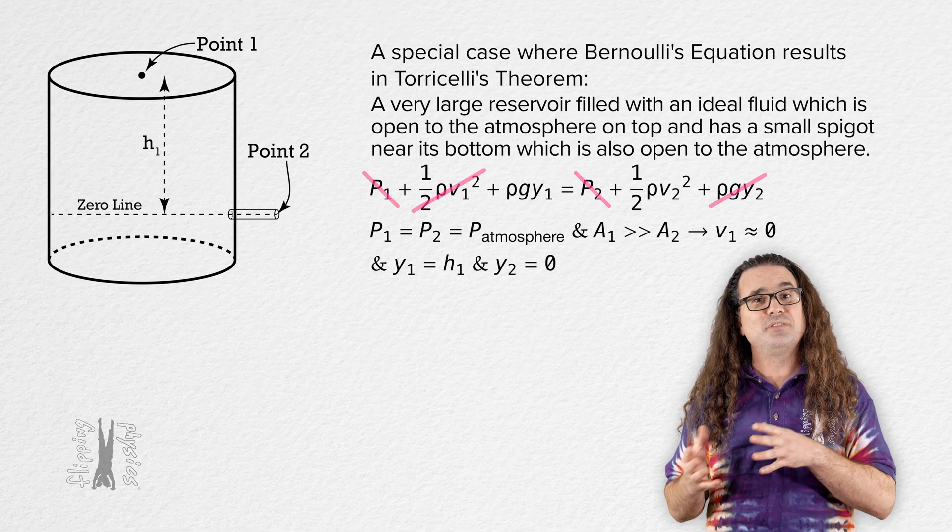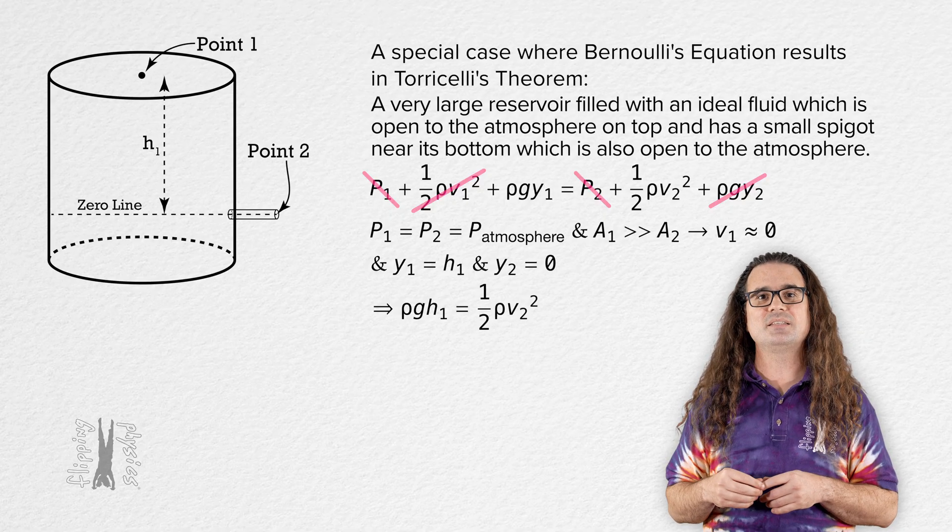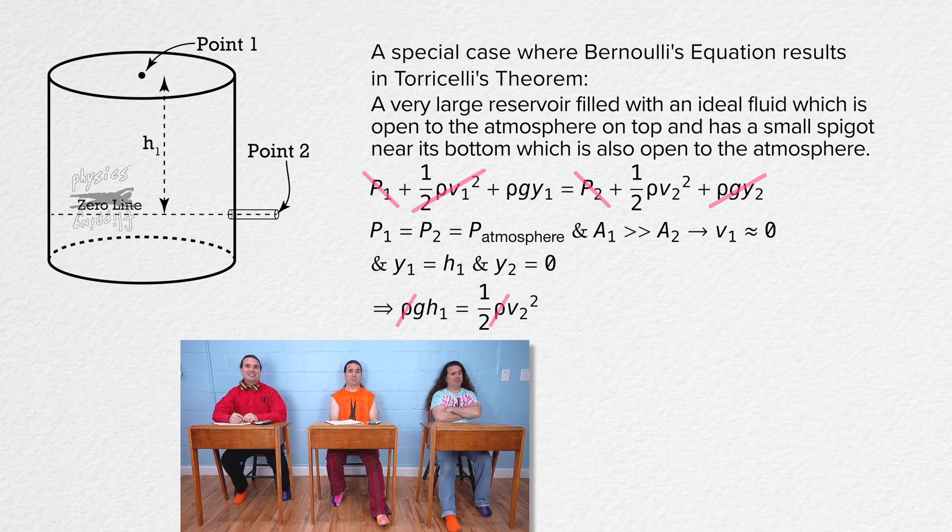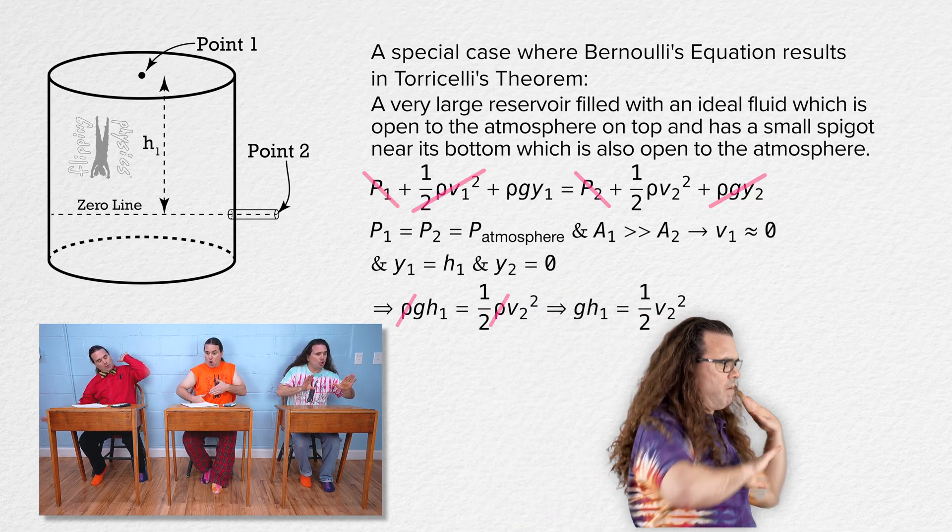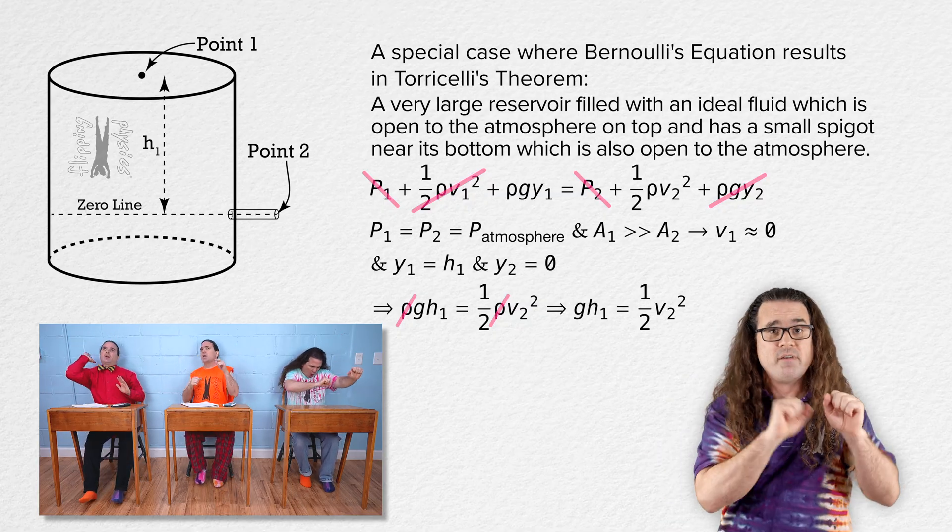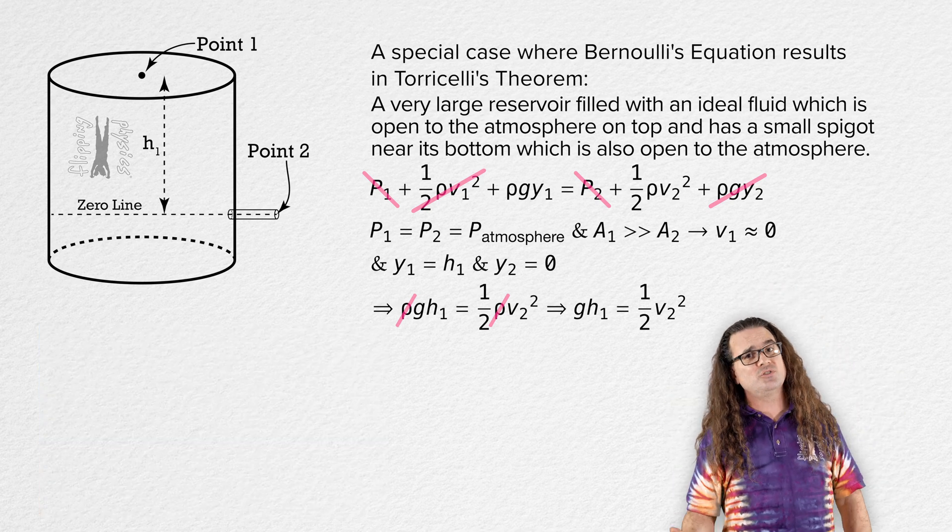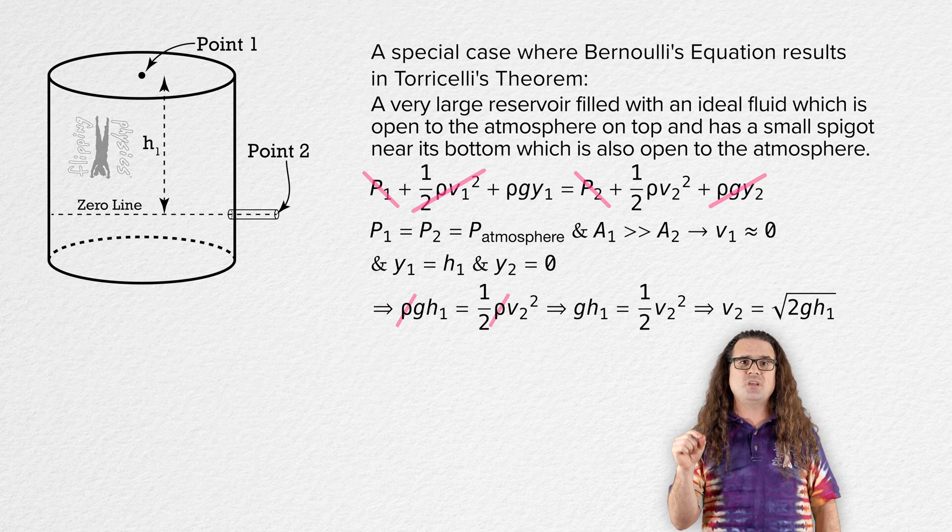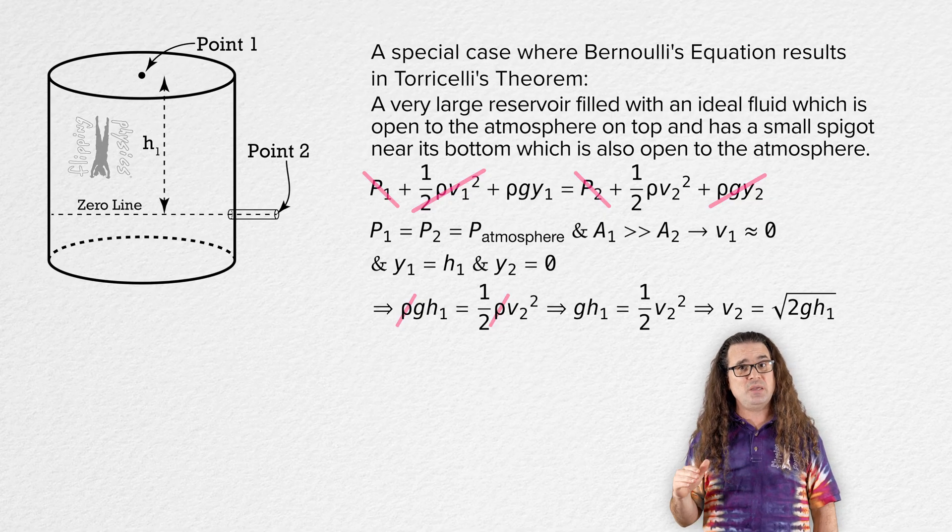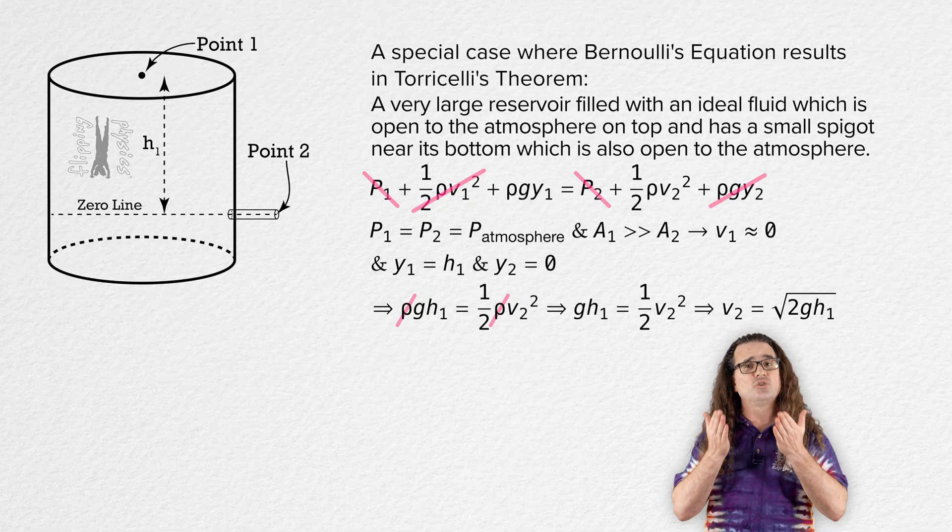All we are left with is fluid density times gravitational field strength times height 1 equals 1/2 times fluid density times speed at point 2 squared. And everybody brought fluid density to the party. And we can solve for speed at point 2. It equals the square root of 2 times gravitational field strength times height of point 1. That equation for the speed of an ideal fluid flowing out of a small spigot in a very large reservoir is Torricelli's theorem.